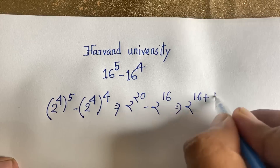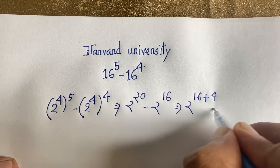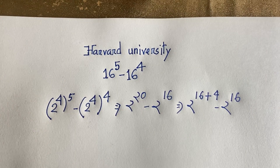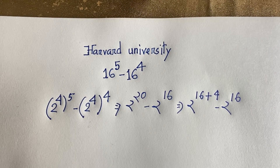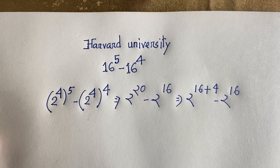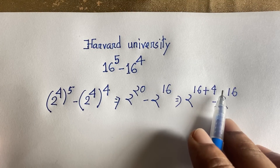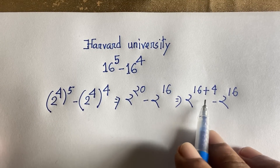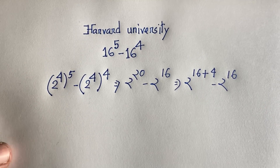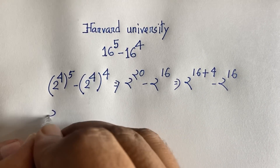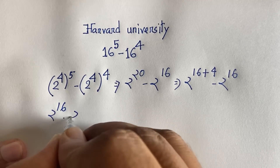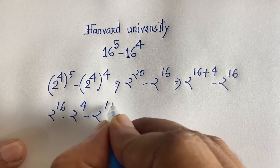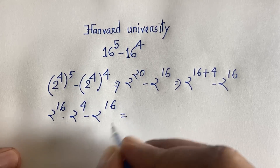Now, 2 to the power 20 can be rewritten as 2 to the power 16 plus 4. According to the exponential law, a to the power n plus m equals a to the power n times a to the power m. Applying this law, the expression becomes 2 to the power 16 times 2 to the power 4, minus 2 to the power 16.